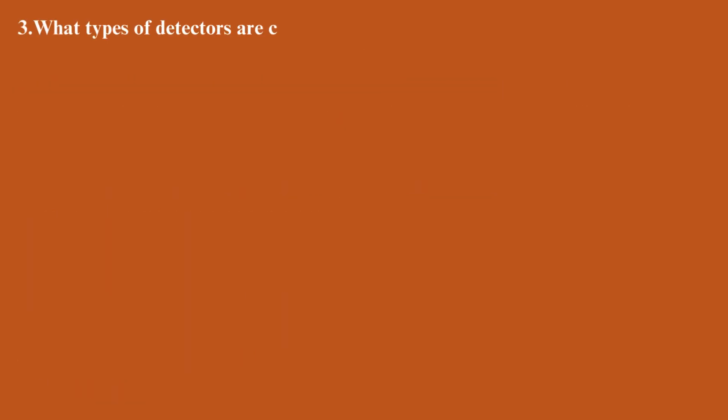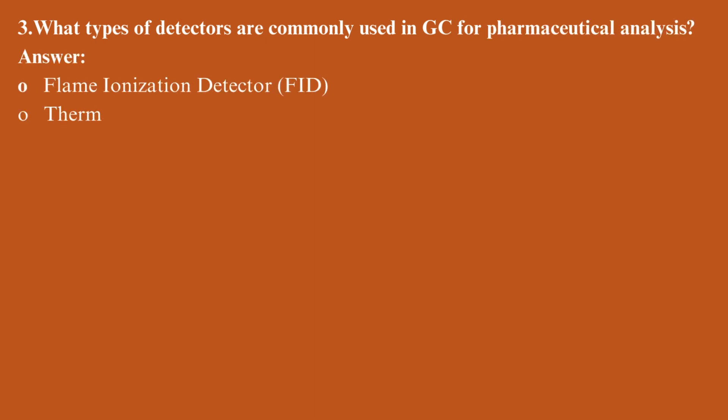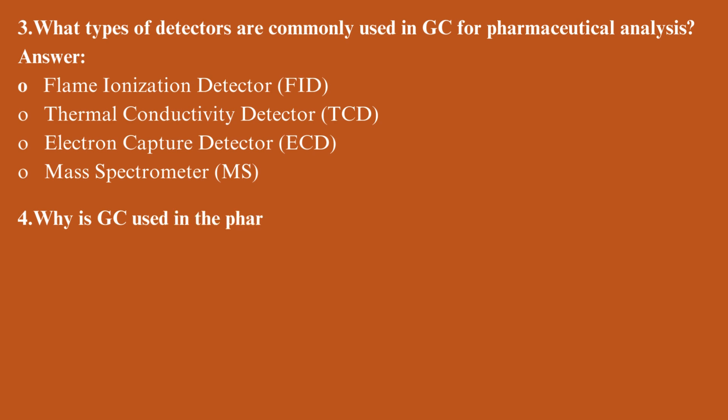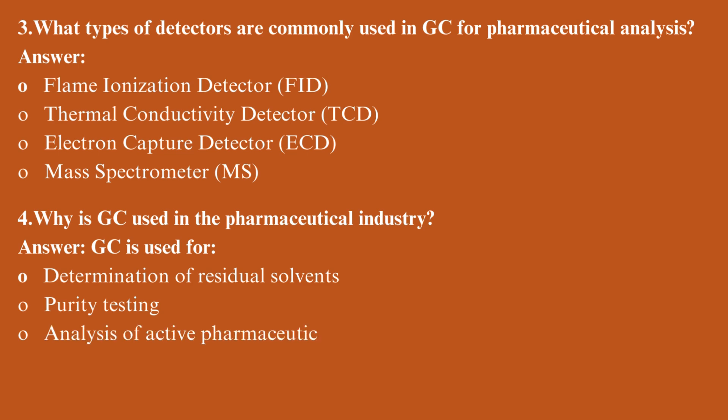What types of detectors are commonly used in GC for pharmaceutical analysis? Flame ionization detector, thermal conductivity detector, electron capture detector, and mass spectrometer. Why is GC used in the pharmaceutical industry? GC is used for determination of residual solvents, purity testing, analysis of active pharmaceutical ingredients, and identification of degradation products.